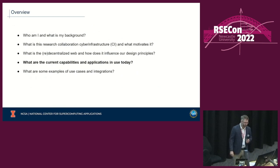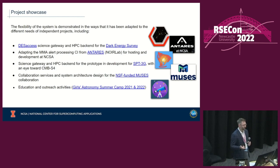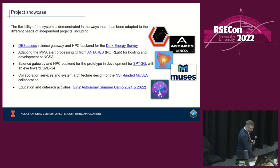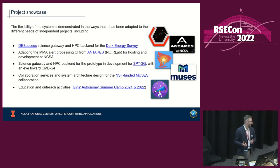So what are the actual capabilities and integrations in use today? This CI is in active use by a variety of research collaborations: the DES access science gateway and HPC back end, the South Pole Telescope (a millimeter wave astronomical survey), the Muses collaboration studying the exotic states of very dense, very hot matter, and also education and outreach activities like our girls' astronomy summer camp.